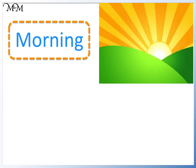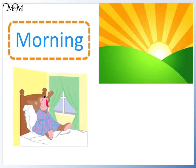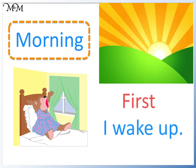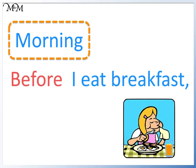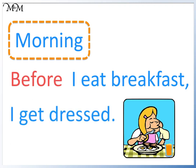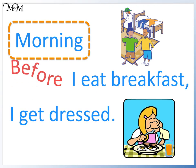This is the time that we wake up. We say, first, I wake up. This means that I wake up before I do anything else. I do other activities in the morning. Before I eat breakfast, I get dressed. Before means that I get dressed and then eat breakfast, in that order.